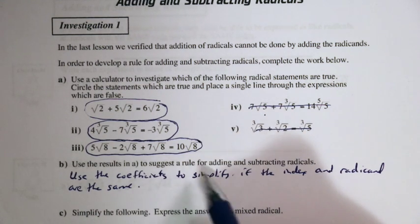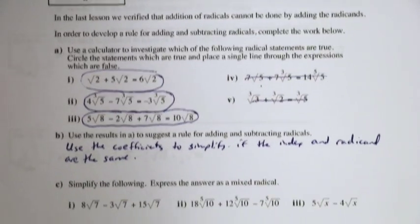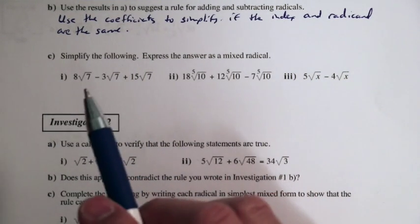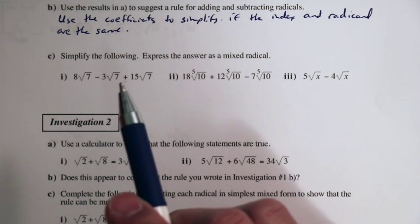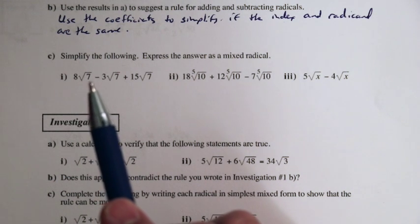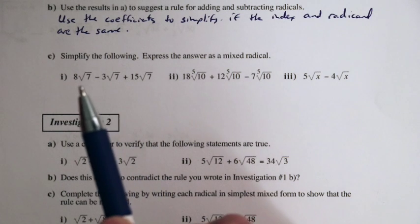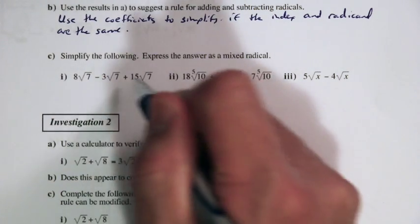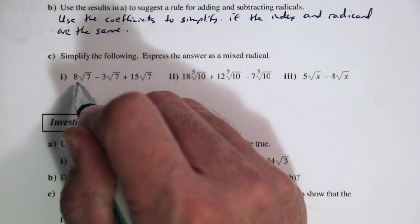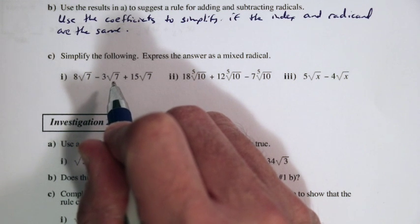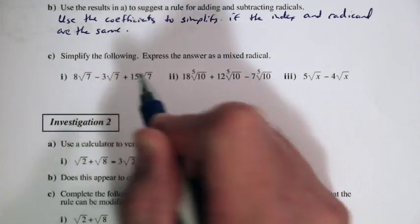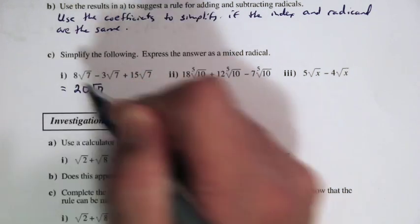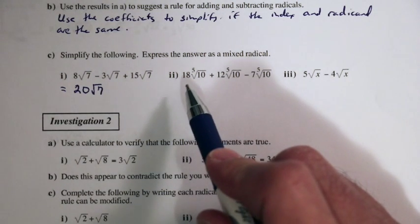Let's take a look at this example — simplify the following and express the answer as a mixed radical. We have 8 root 7 minus 3 root 7 plus 15 root 7. Noticing here that the index is the same — it's a square root — and the radicand is also the same. We have 8 of one quantity minus 3 of that same quantity, which makes 5, and then adding 15 more. So 8 minus 3 is 5, plus another 15, equals 20 root 7.